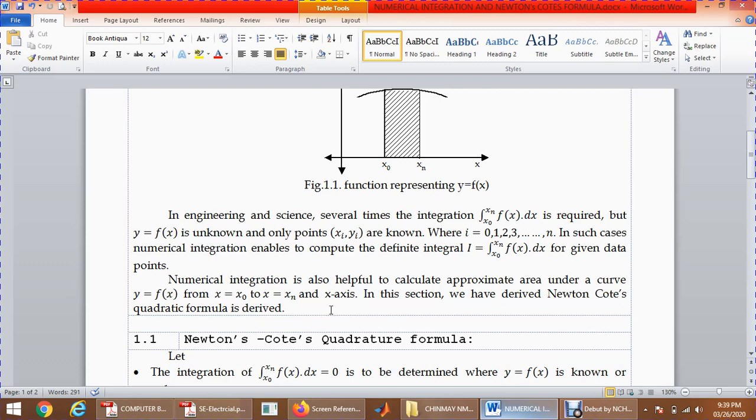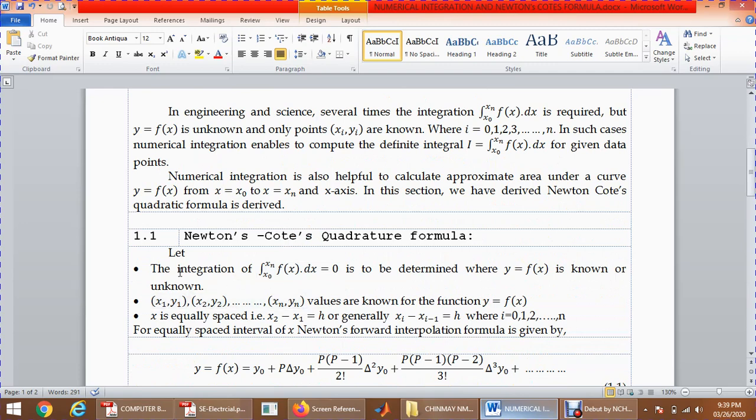In this section, we are going to derive Newton's Cotes quadrature formula. Let the integration ∫(x0 to xn) f(x) dx = 0 be determined where y = f(x) is the function which is known or unknown depending upon the situation, but we have the points (x1, y1), (x2, y2) up to (xn, yn). These are the known values for a given function y = f(x).